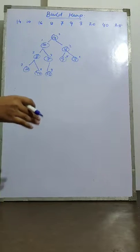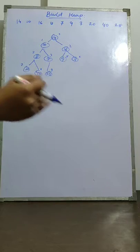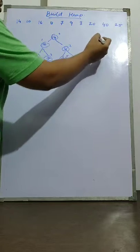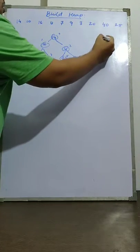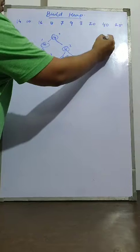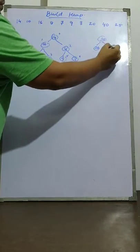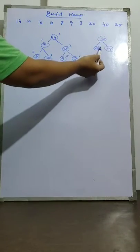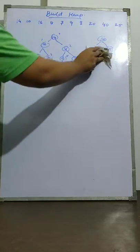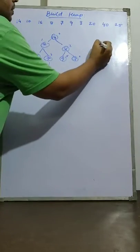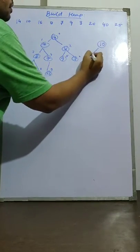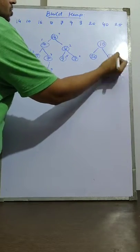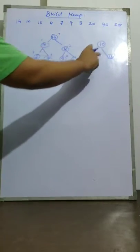A heap maintains the maximum or minimum property. In a max heap, the root element is greater than its child elements — for example, 30, 20, and 25 where 30 is the root. In a min heap, the root element is the minimum — for example, 10, 20, and 50, where 10 is the root.